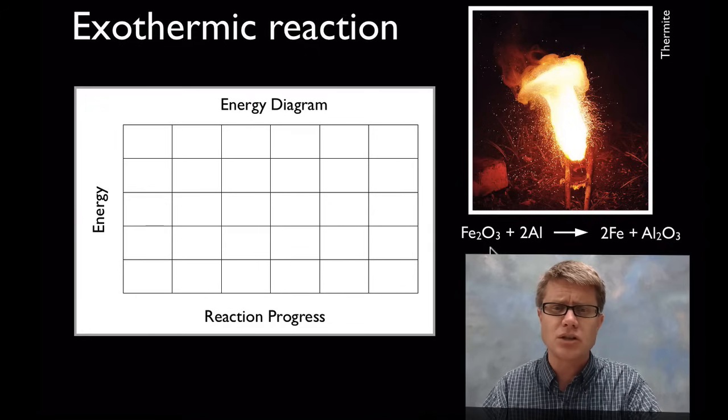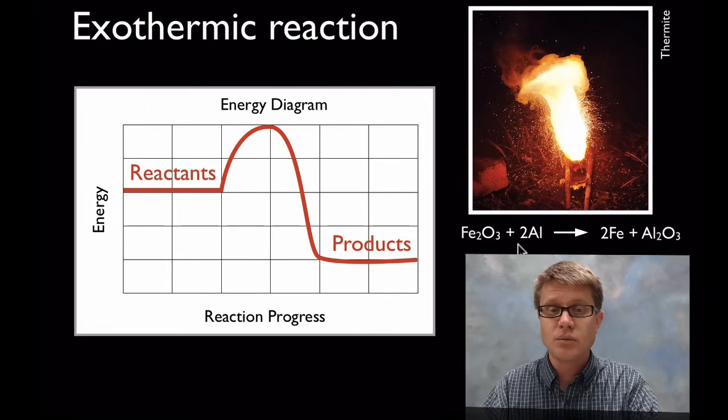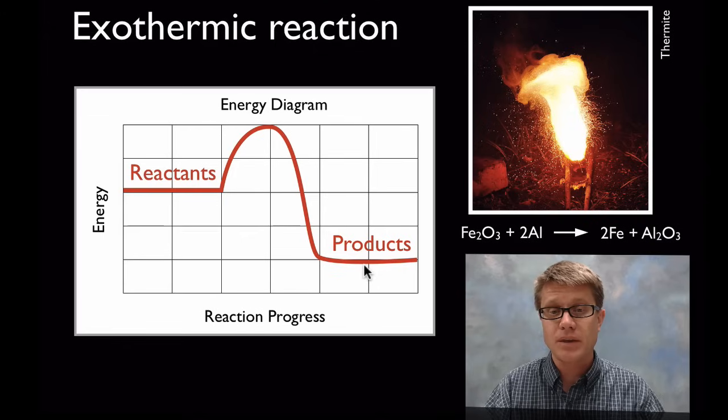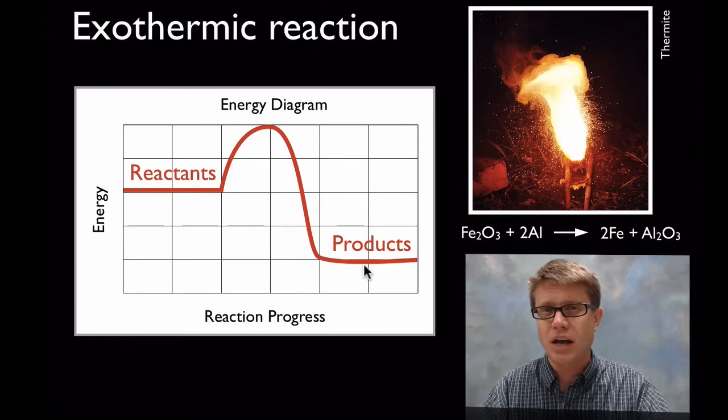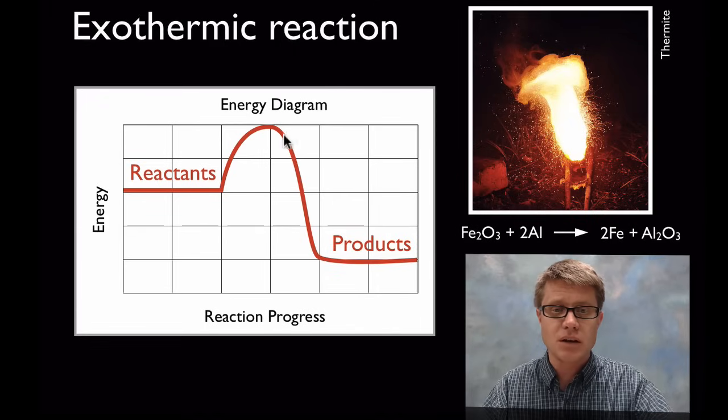But if we were to look at the energy diagram of this over time as it progresses we'd find that these reactants, the iron oxide and the aluminum have a higher energy. In other words there's more energy locked in those bonds than we're going to have in the products. And so we can see this as a downhill reaction. Now what's going on? Why do we see this increase in energy here?